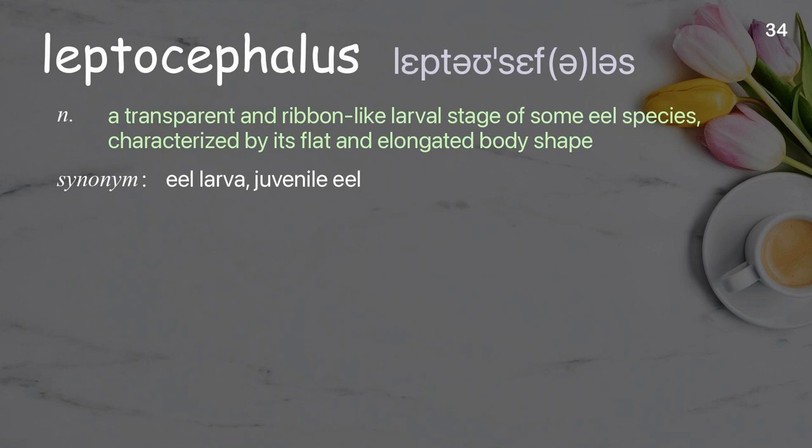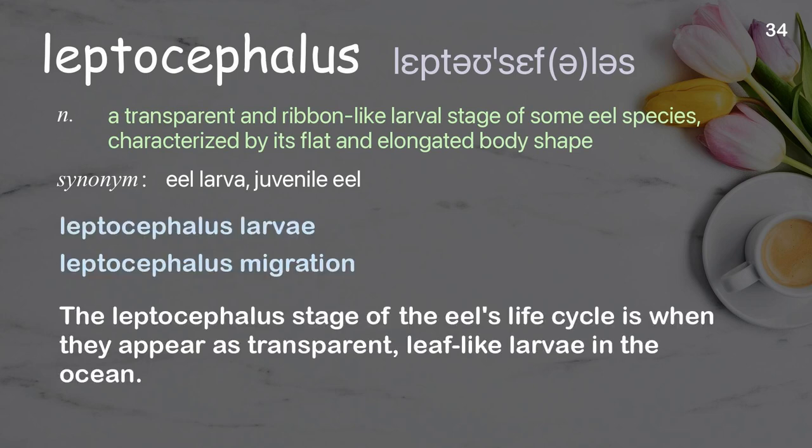Leptocephalus: A transparent and ribbon-like larval stage of some eel species, characterized by its flat and elongated body shape. Examples: Leptocephalus larvae, leptocephalus migration. The leptocephalus stage of the eel's life cycle is when they appear as transparent, leaf-like larvae in the ocean.